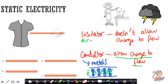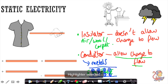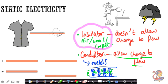On the other hand, insulators don't allow charge to flow easily. They include things such as air, wool, carpet, and similar materials. The majority of materials are insulators, whereas all metals are good conductors. This is important because static electricity comes about when we are talking about insulators. You can't build up charge in a conductor because the charge will just flow through - that's why earth wires are made out of metal, as a safety feature to allow current to flow.